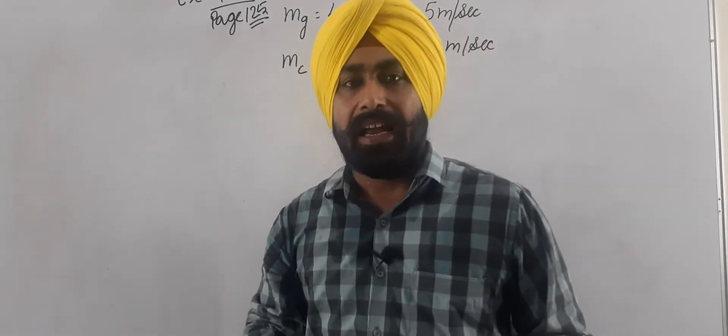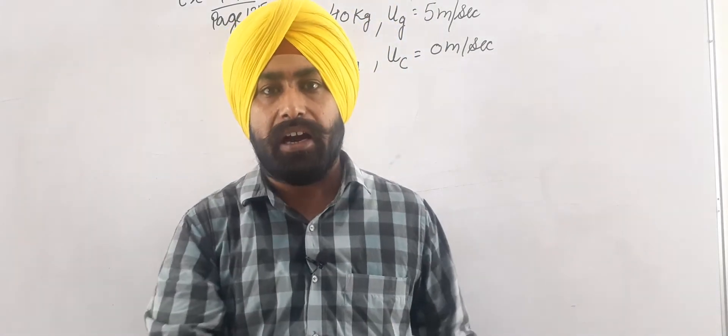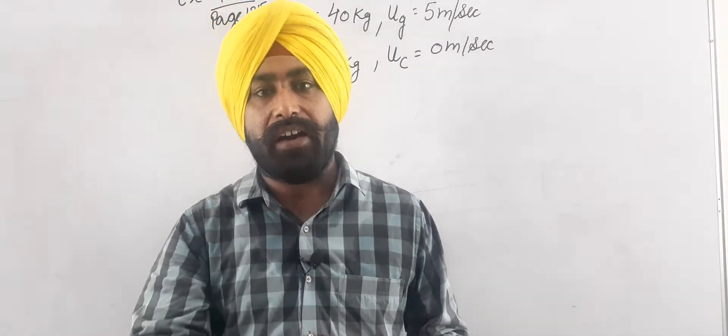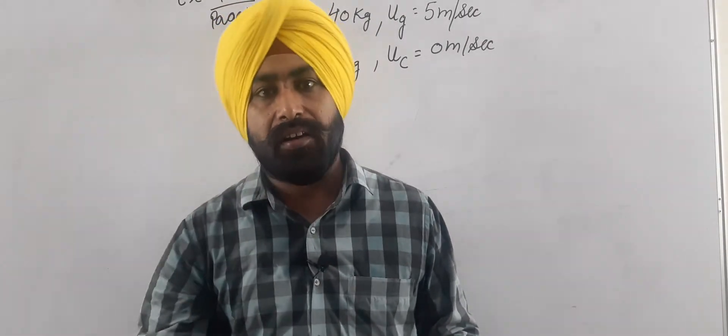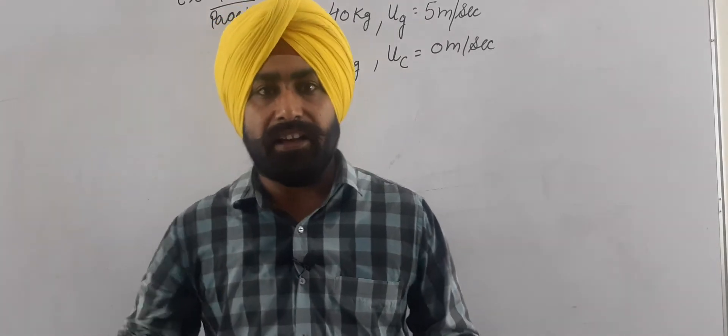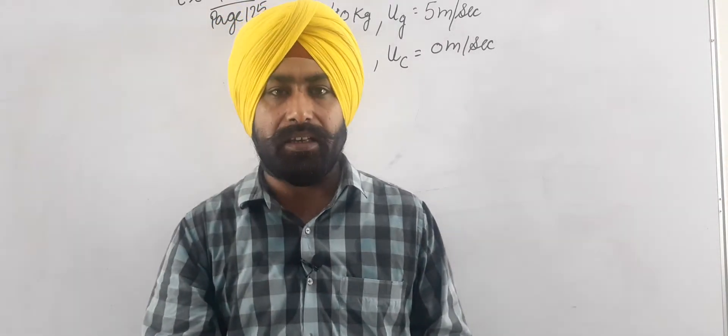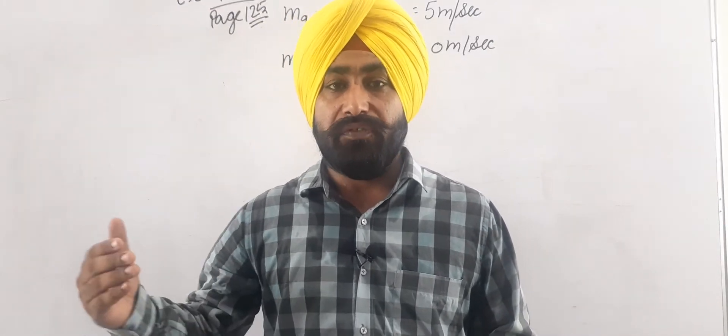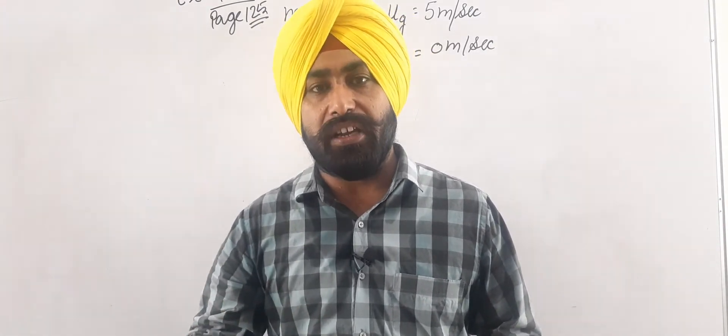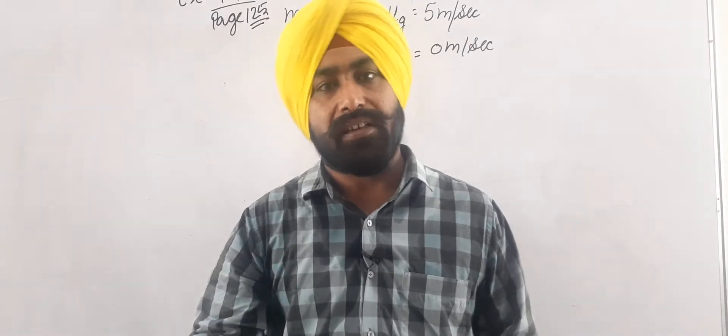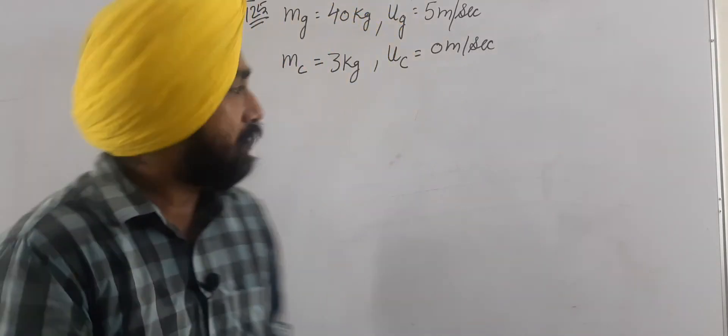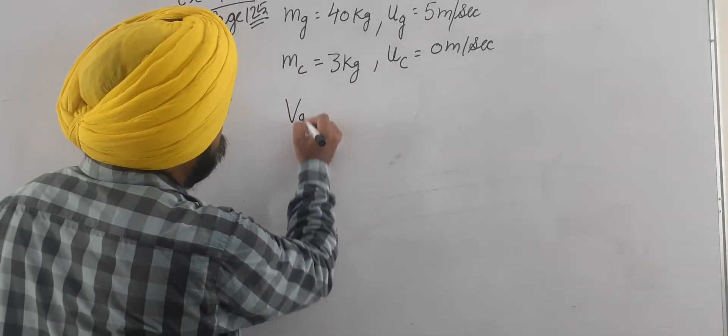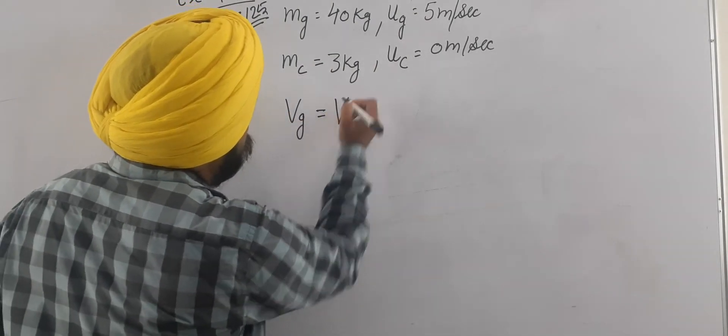So students, first of all try to understand this: when the girl jumps on the cart and after the girl reaches on the cart, the velocity of girl and velocity of cart is same because the girl is standing on the cart and then cart is moving. This is the same as the bus, so the final velocity of girl is equal to final velocity of cart.